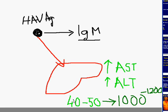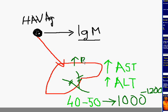In addition to that, these viral infections can cause severe obstruction in the biliary channels in the liver. When this obstruction is present in the biliary channels, you will get an excess amount of bilirubin in the serum, and this excess bilirubin will produce jaundice.